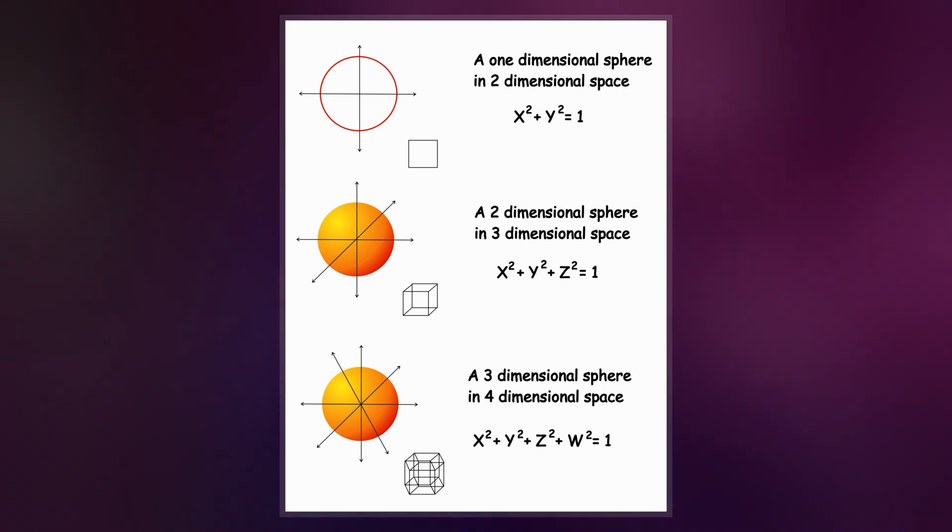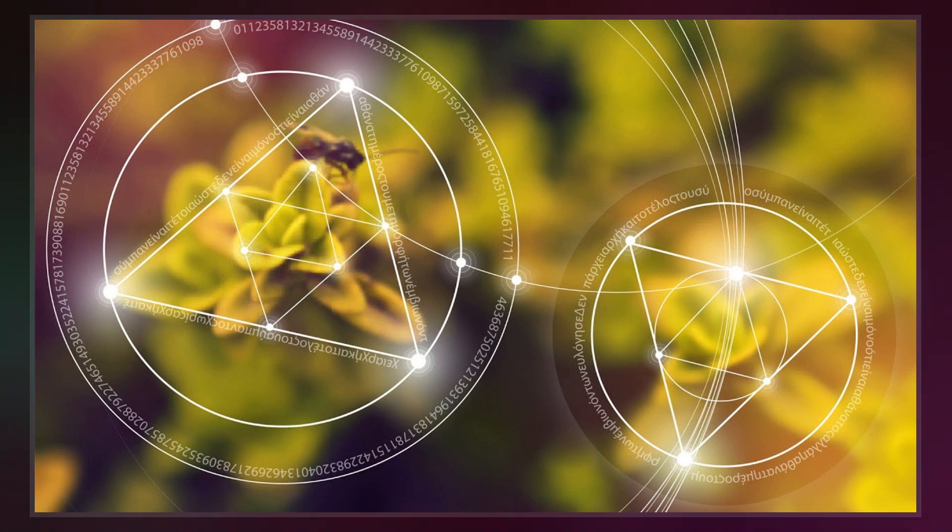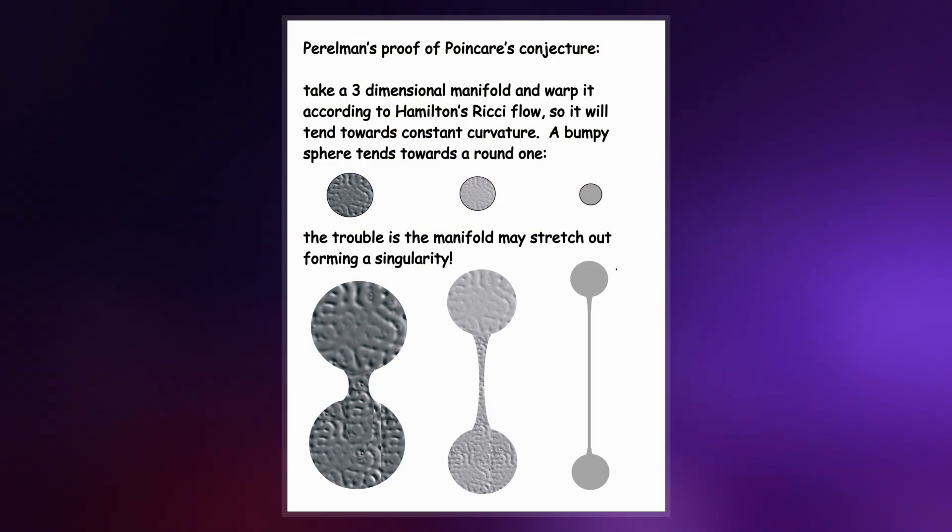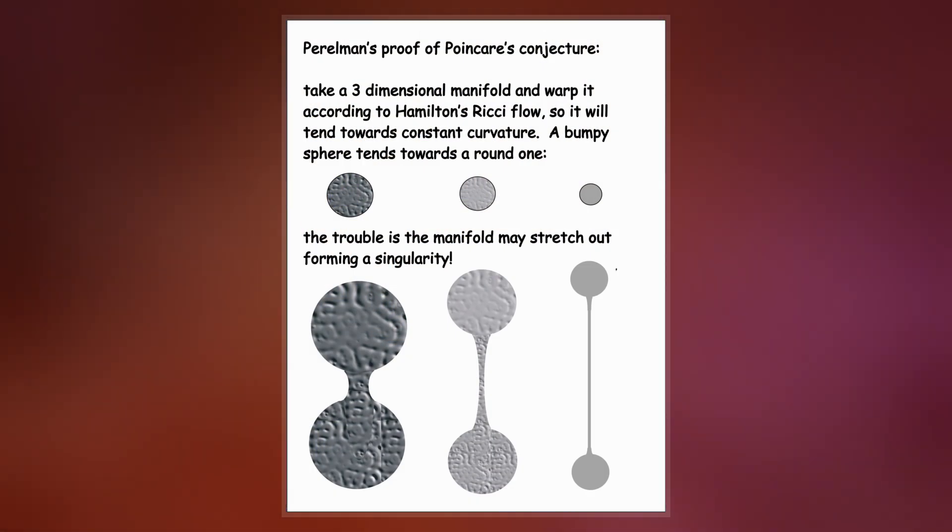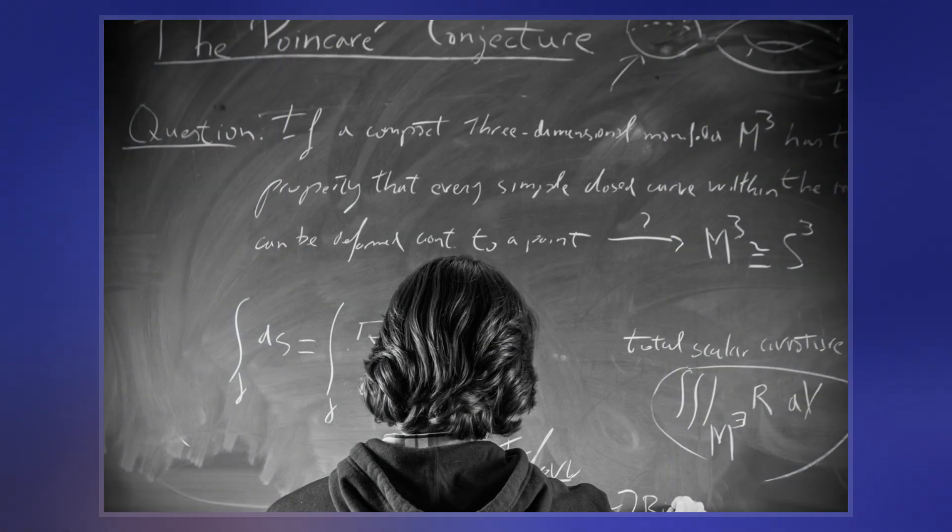The analogous conjectures for all higher dimensions were proved before a proof of the original conjecture was found. After nearly a century of effort by mathematicians, Grigori Perelman presented a proof of the conjecture in three papers made available in 2002 and 2003 on arXiv.